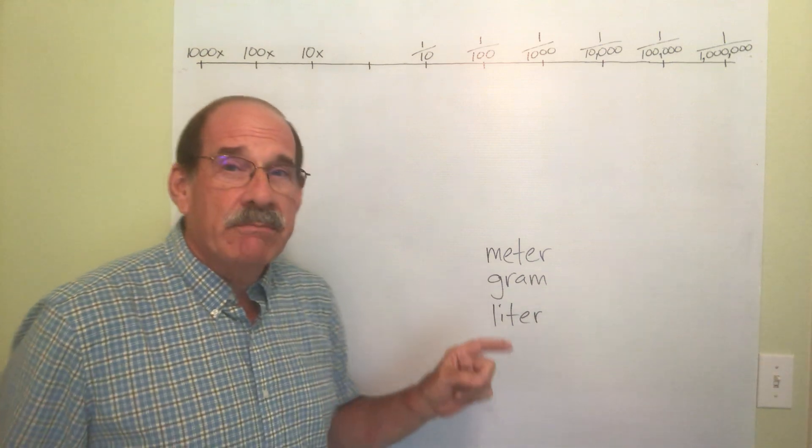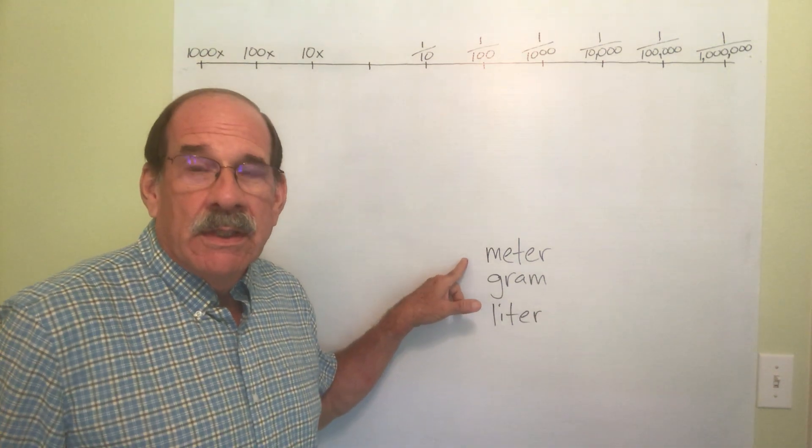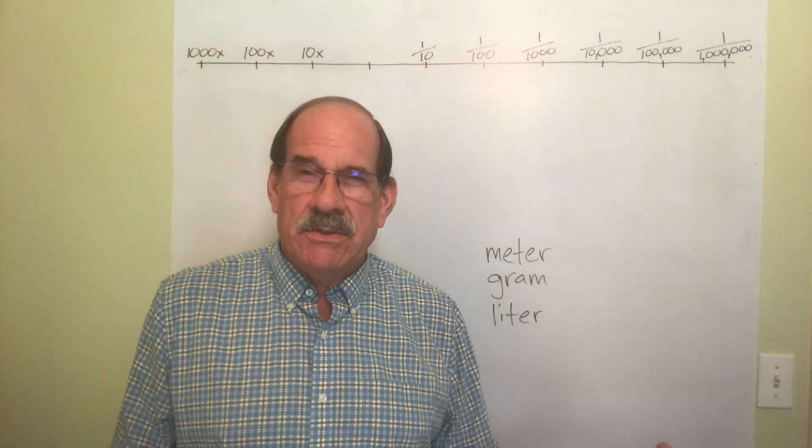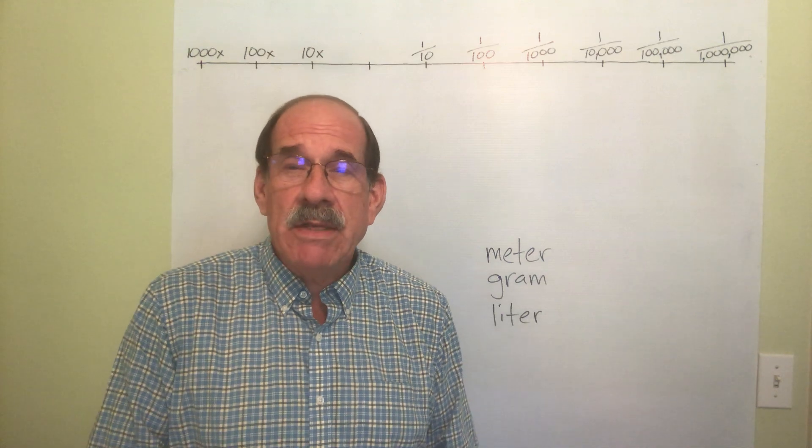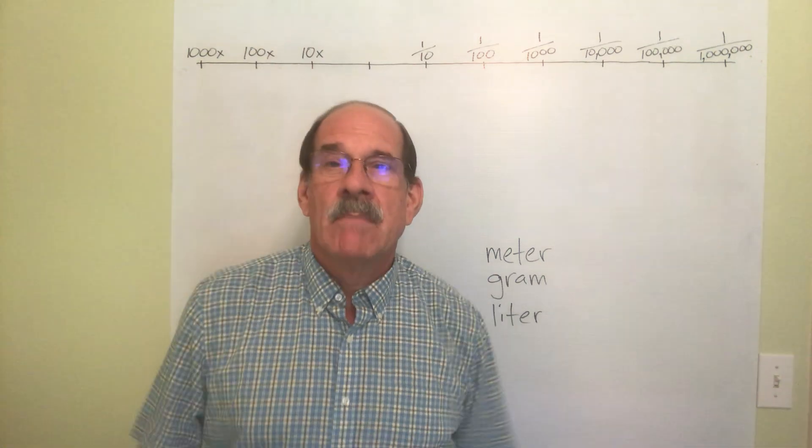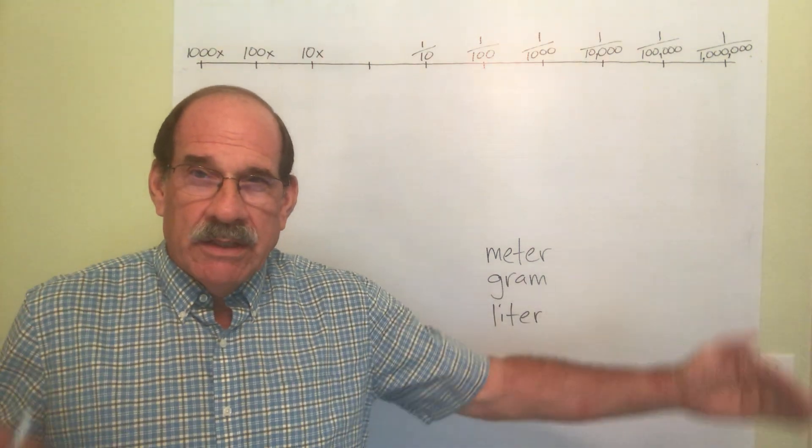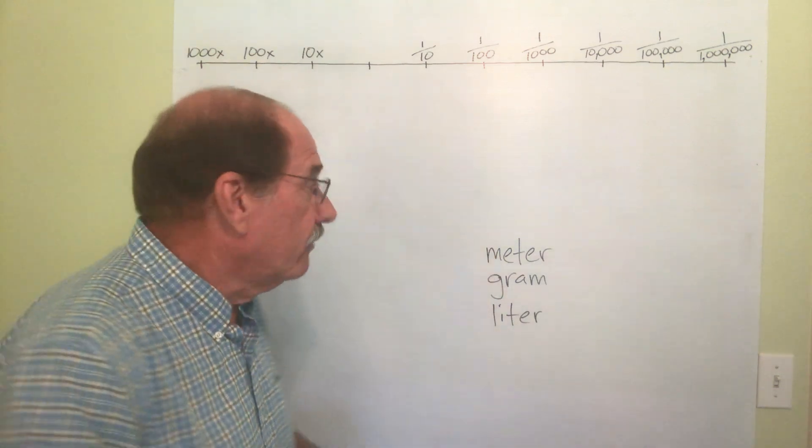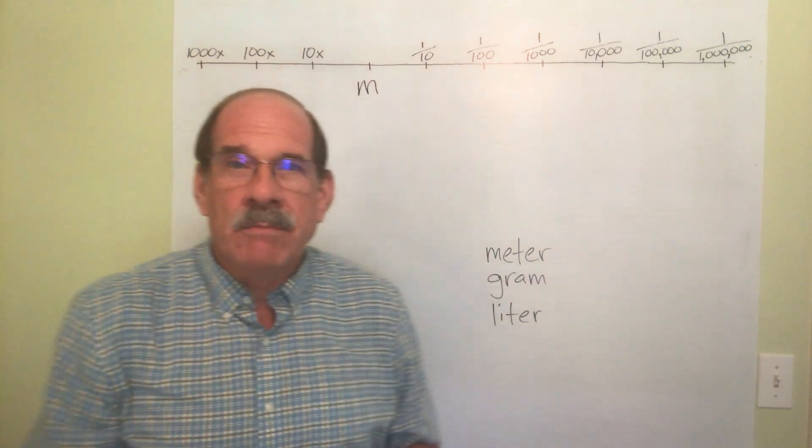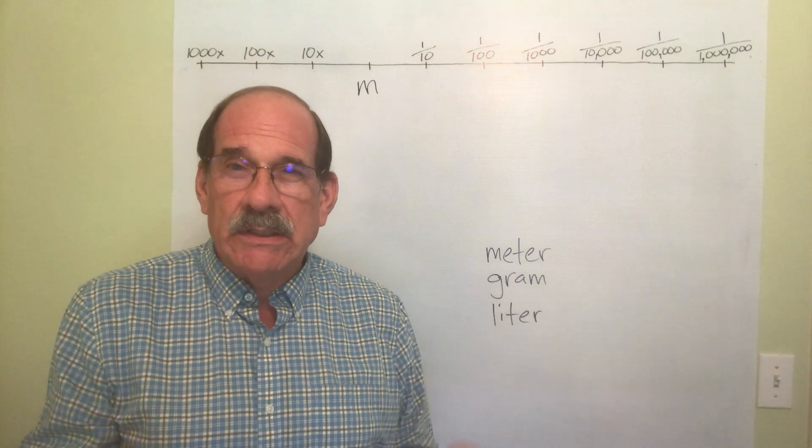In the metric system we have three major measurements. We have one called meter - that's a length measurement. Having a mental image helps; it's not necessary but it kind of helps sometimes. A meter is a little more than a yard, a little more than three feet long. The symbol for meter is a lowercase m. With one exception, everything in the metric system is lowercase letters.